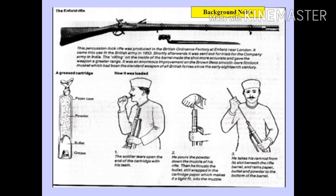Many historians also believe this story and feel it was a deliberate move to hurt Indian sentiments. The introduction of cartridges greased with the fat of cows and pigs became the immediate cause behind the outbreak of the revolt.